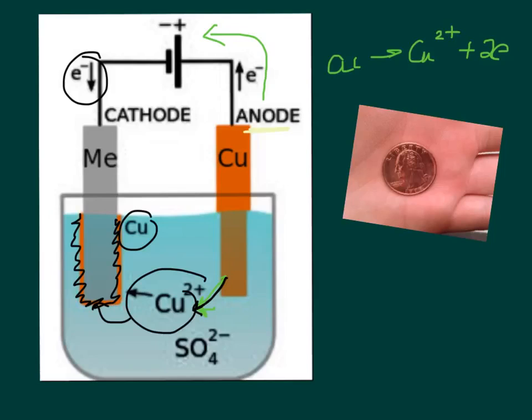So we're really just taking this copper from the anode and plating it onto the cathode. So it's not like you're making copper. You're moving it from one place to another.